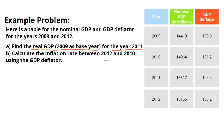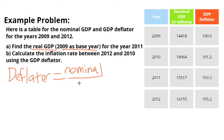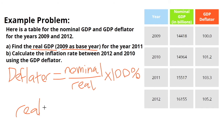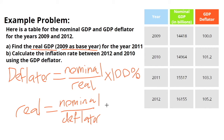How do we find real GDP from the GDP deflator? The equation for the GDP deflator is: deflator = (nominal / real) × 100%. If you multiply both sides by real and divide both sides by deflator, then what you end up with is real = (nominal / deflator) × 100.